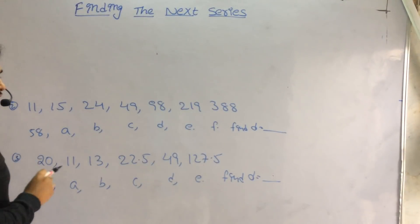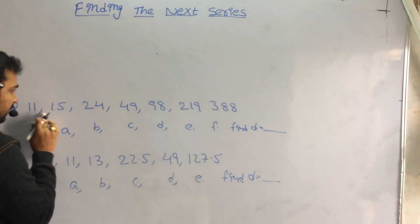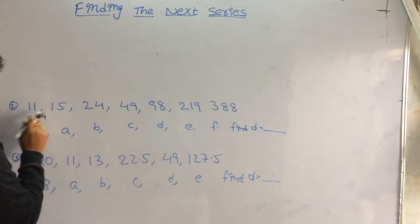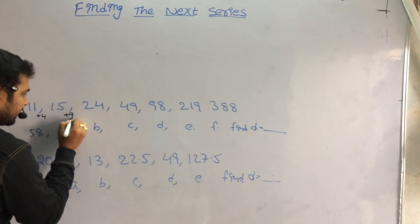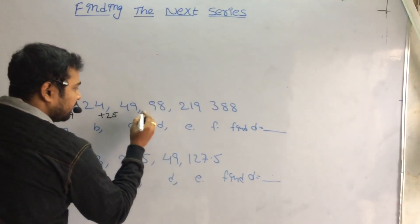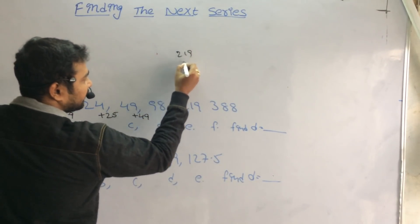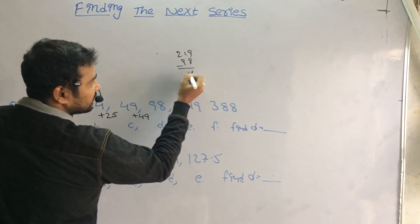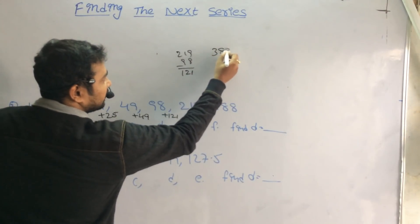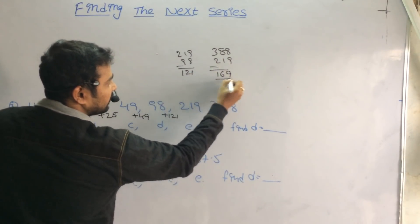In the second question, I want to find the logic. The difference between any two numbers — here the difference is 4; then 15 and 24, difference is 9; then 24 and 48, difference is 25; then 49 plus 49 is 98; and 219 minus 98 is 121, so the difference is 121. And 338 minus 219 is 961.